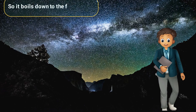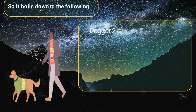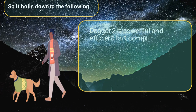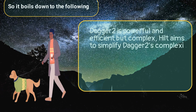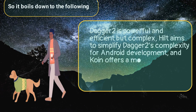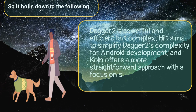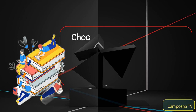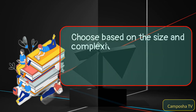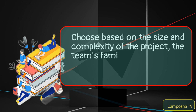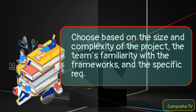To summarize: Dagger2 is powerful and efficient but complex. Hilt aims to simplify Dagger2's complexity for Android development. Koin offers a more straightforward approach with a focus on simplicity and ease of use. Choose based on the size and complexity of the project, the team's familiarity with the frameworks, and the specific requirements of the application.